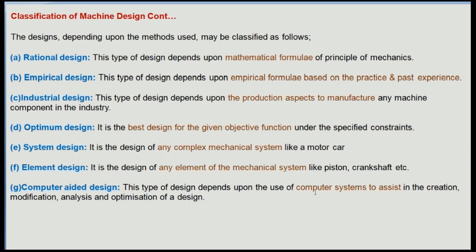Rational design is based on mathematical formulae and engineering mechanics. Empirical design is based on the experience and expertise of an individual. Industrial design depends on the ease of manufacturing — how best you can manufacture with available machinery. Optimum design involves designing economically given a set of conditions and constraints, minimizing operations, machines, and materials. System design is the design of a complex mechanical system such as a motor car or lathe machine.